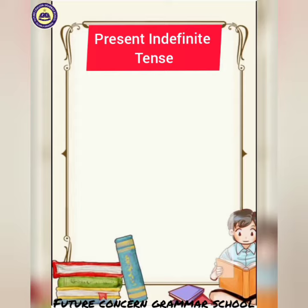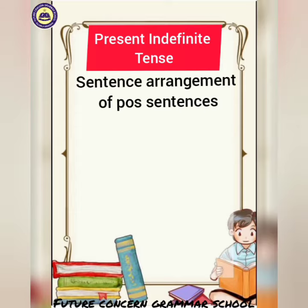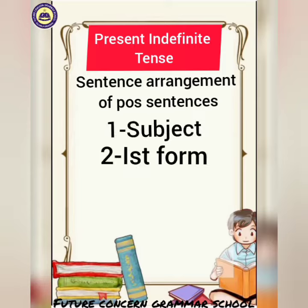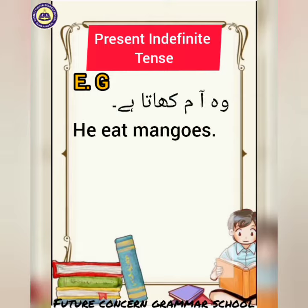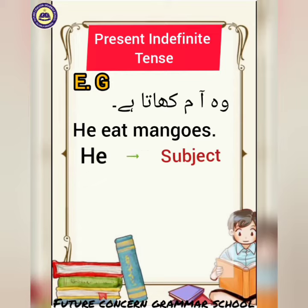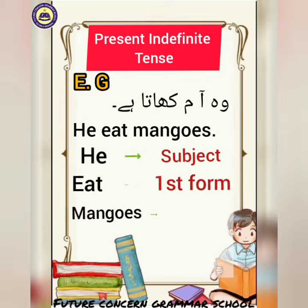Present indefinite tense ke positive sentences ki sentence arrangement kuch yoo hai ke sabse pehle subject, then first form of verb, then object aata hai. For example, 'wo aam khata hai' translates to 'he eats mangoes'. Here, 'he' is the subject, 'eat' is the first form of verb, and 'mangoes' is the object.